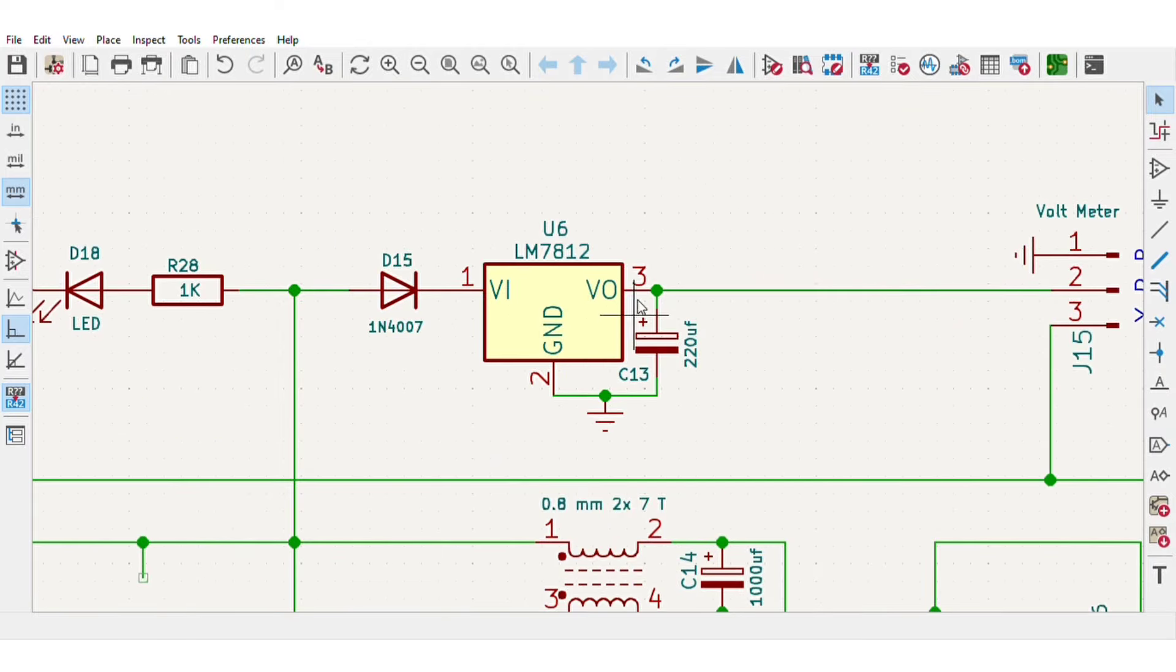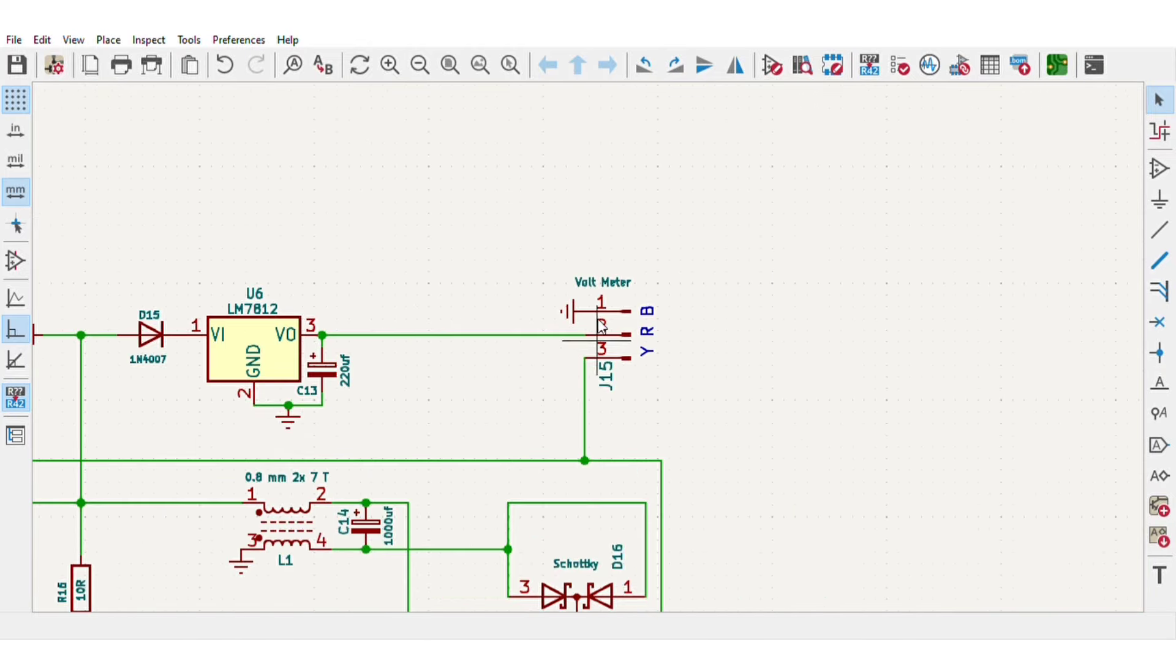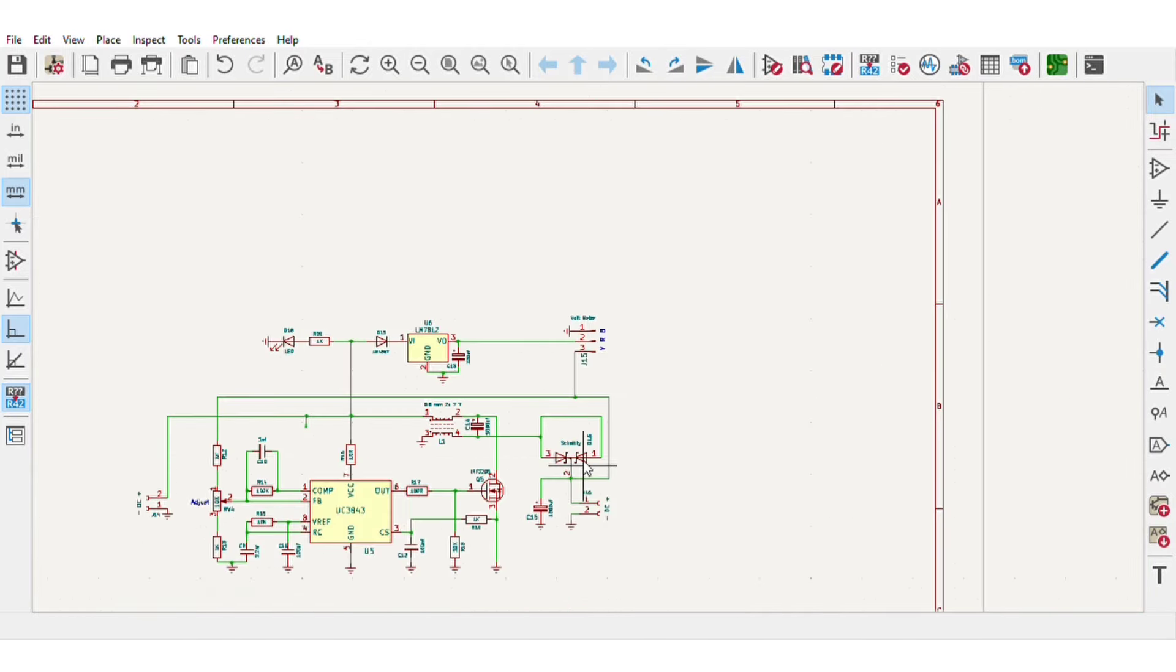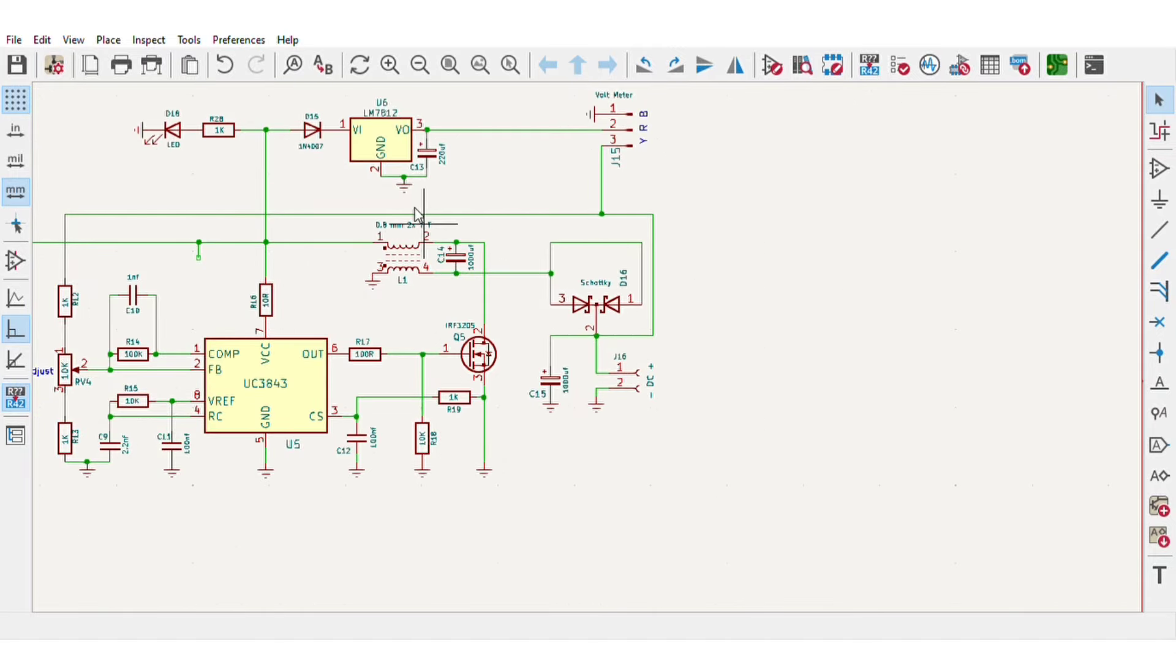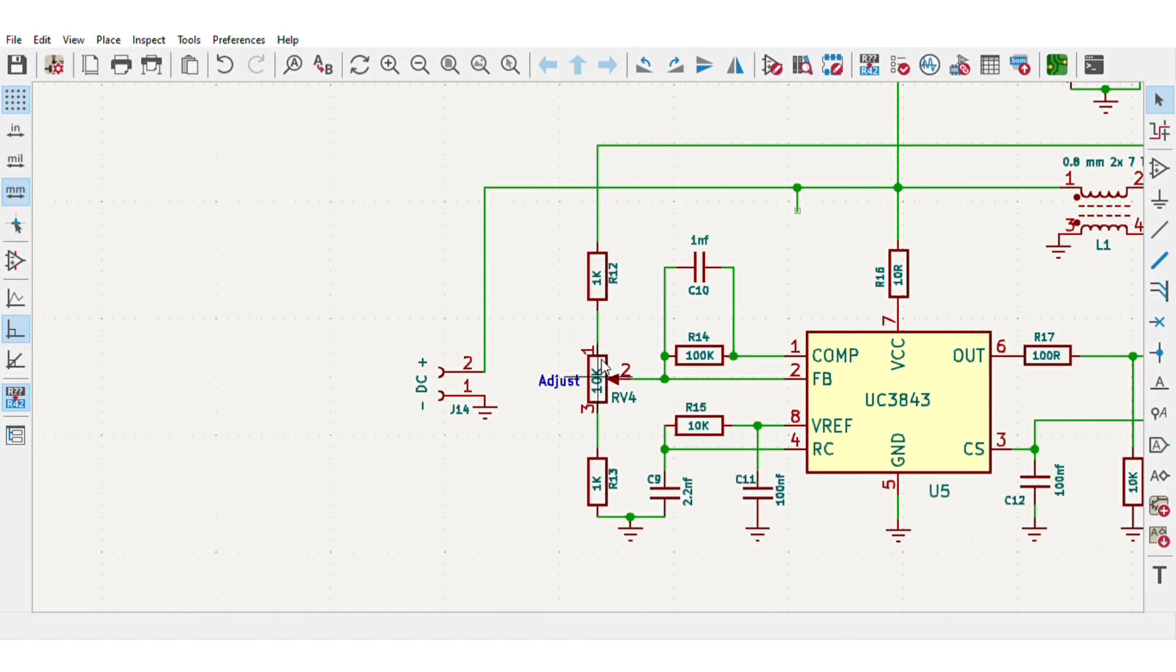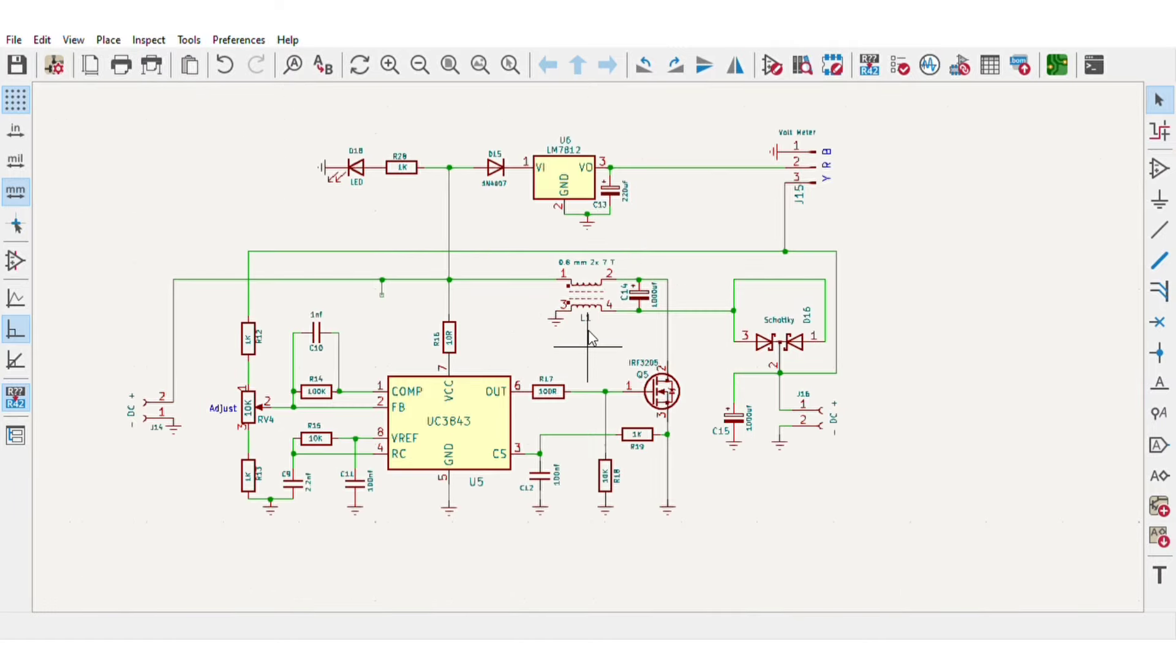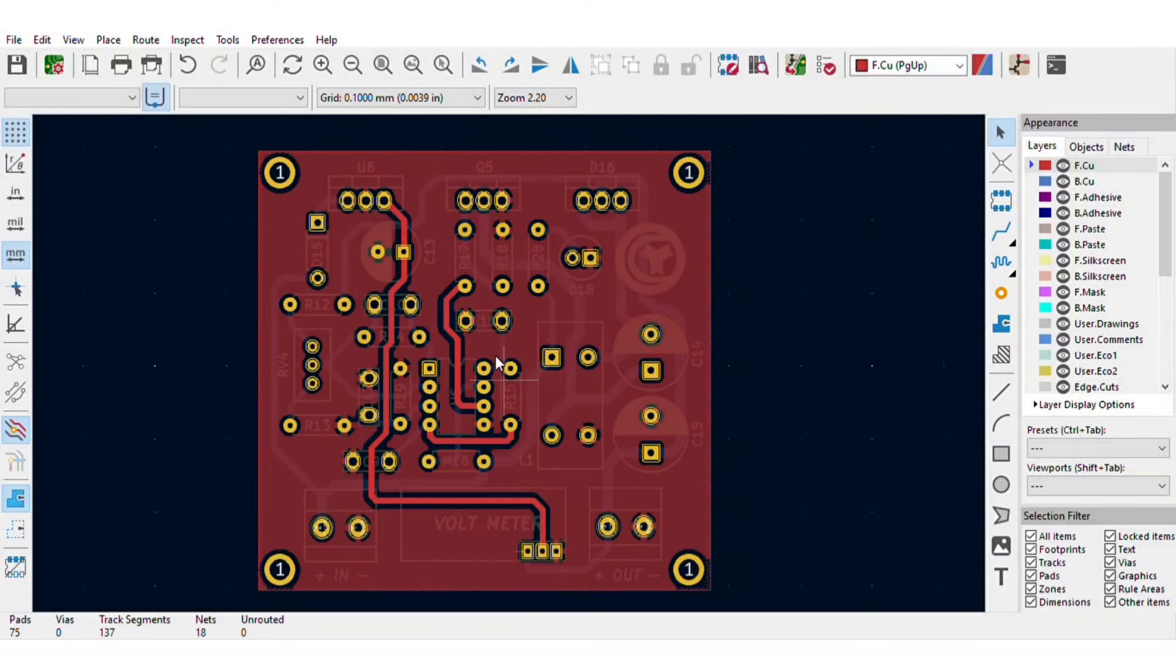Also, a 12V regulator is used for limiting the supply to voltmeter, through which you can easily monitor the output voltage. The voltage feedback goes to this divider network, and with this potentiometer you can adjust the output voltage. For easy assembly of this circuit, I converted this schematics into the PCB.